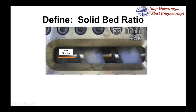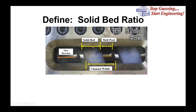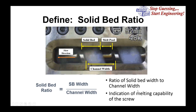We define a parameter called the solid bed ratio — the width of the solid bed relative to the channel width. As the melt pool gets wider, the solid bed gets narrower, so the solid bed ratio is the solid bed width divided by the channel width. It's an indication of the melting capability of the screw, used to determine whether the screw design is correct for the material and conditions.